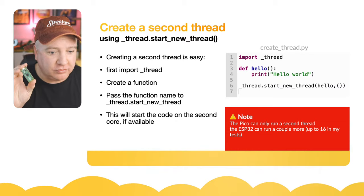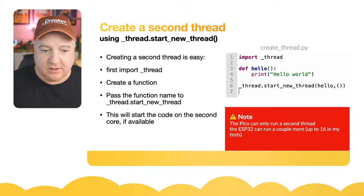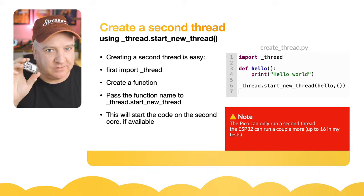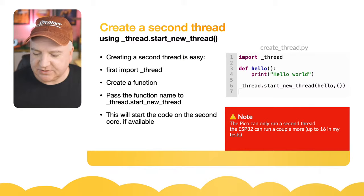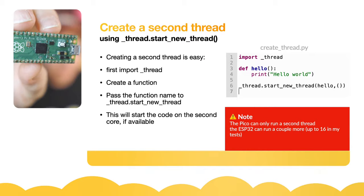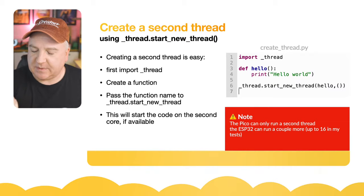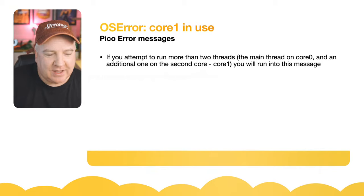On the ESP32 you can run about 16 threads on the dual-core device. I've been experimenting with the ESP32-S specifically. This Raspberry Pi Pico is the original 2020 version 1 - I'm sure new versions will come out in the future.